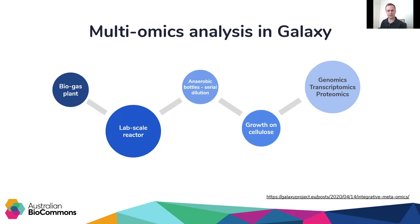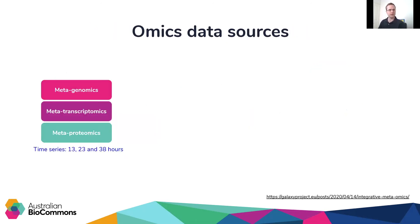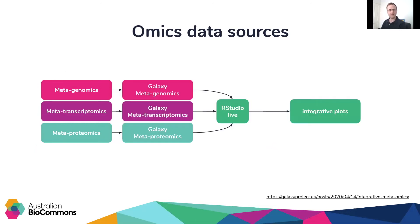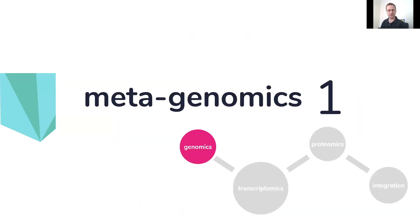Samples from a biogas plant were moved to a lab-scale reactor. A serial dilution to extinction experiment was performed under anaerobic conditions. Microorganisms were grown on cellulose, and then extractions were performed for the various omics. For transcriptomics and genomics, this was sequencing on an Illumina platform. For proteomics, this was mass spectrometry with a Q Exactive. The omics data sources generated were metagenomics, metatranscriptomics and metaproteomics, with interconnected Galaxy workflows developed for each one.